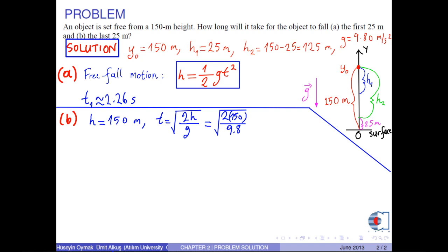Then, square root of 2 times 150 meters over 9.8 meters per second squared. This results in approximately 5.508 seconds.